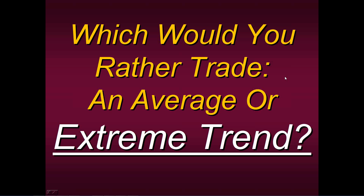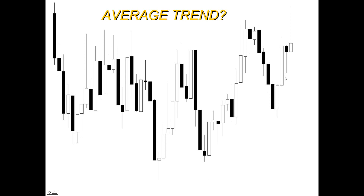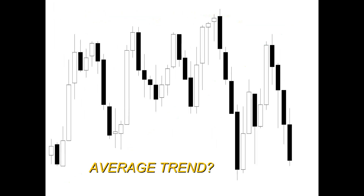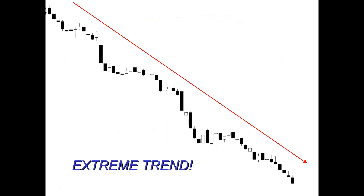Think about it. Would you rather trade an average or an extreme trend? Think of the way you generate signals — one of my strategies, a student of mine, something you've made up, or maybe another educator's strategy. While you're trading it, would you rather apply those strategies during an average trend or an extreme trend? Would you rather be trading during this average trend or this extreme trend, which was conversely to the downside?